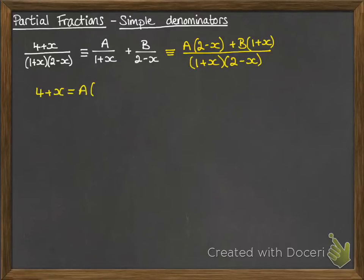Now from that line there we get that the tops are all equal, so the numerators. So we've got 4 plus x is equal to A multiplied by 2 minus x plus B multiplied by 1 plus x. That was just whatever the A and B needs to be times by to be able to go over that common denominator.